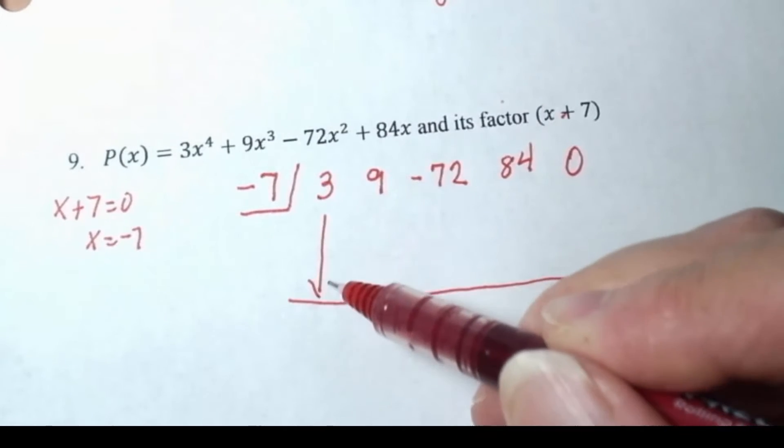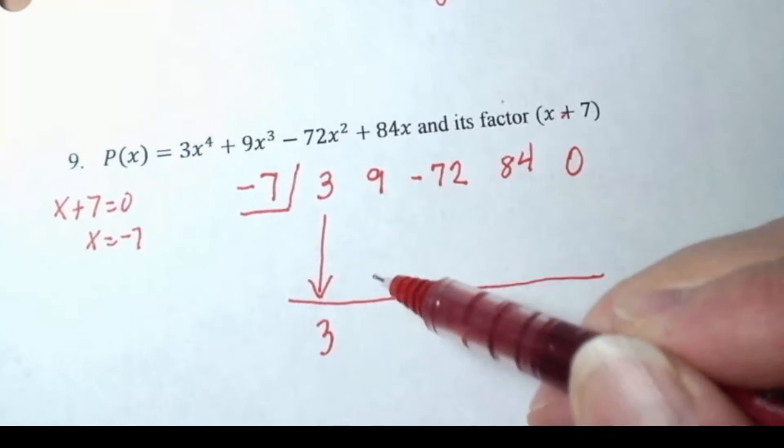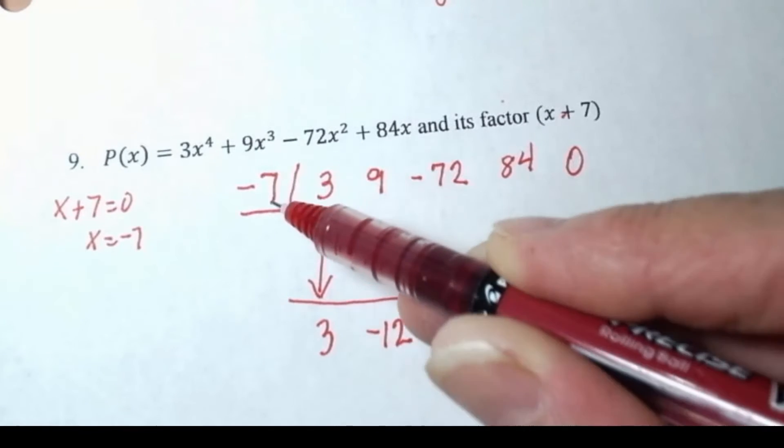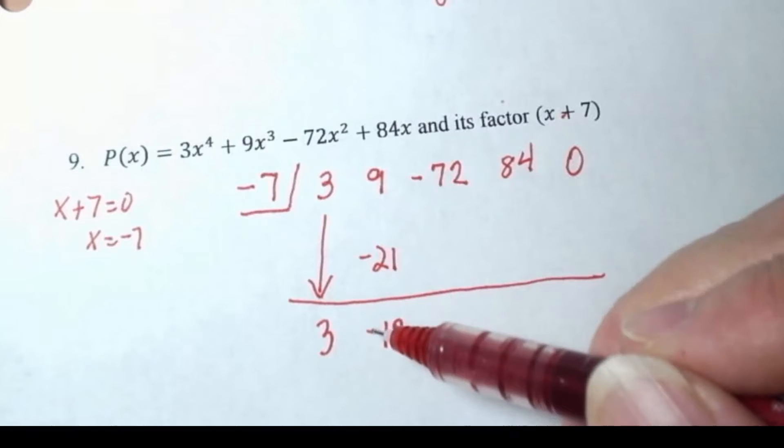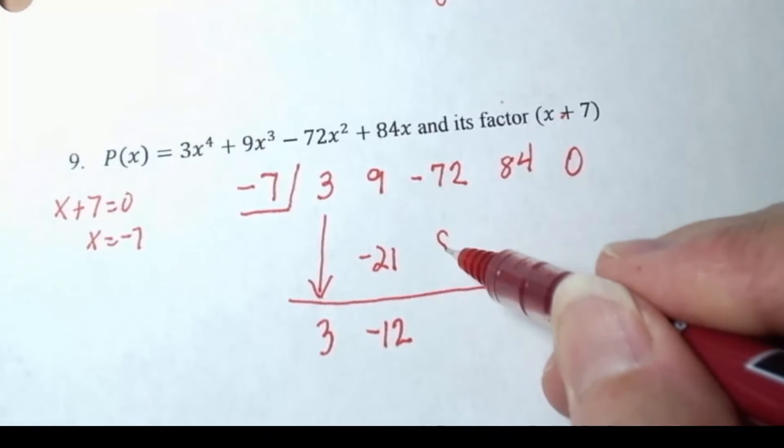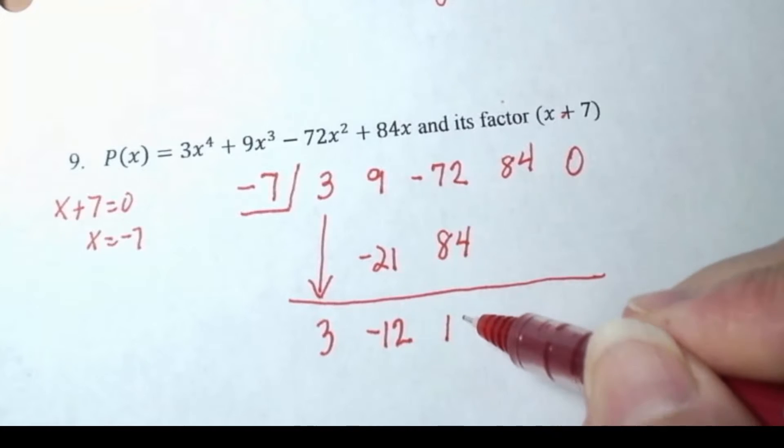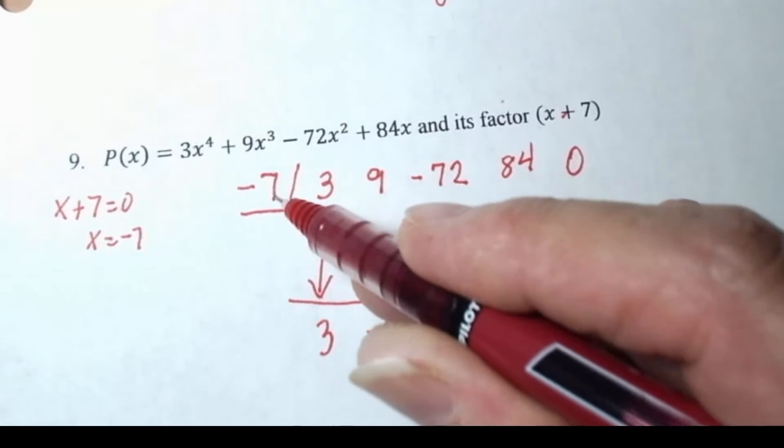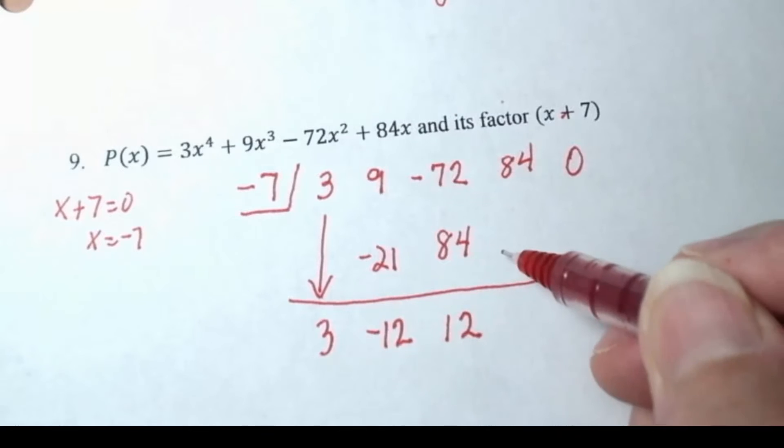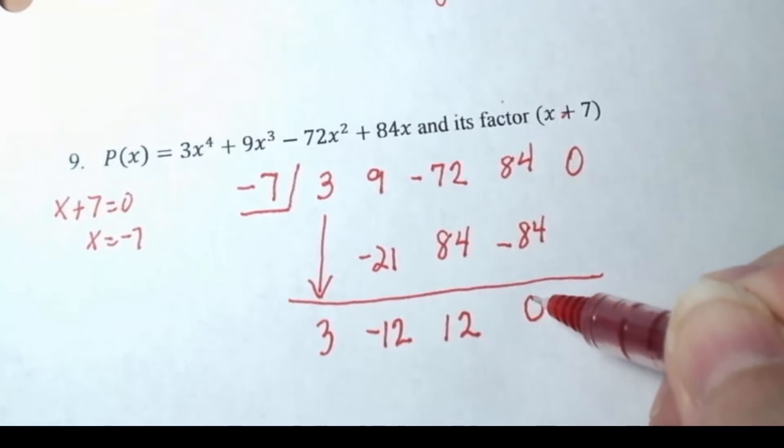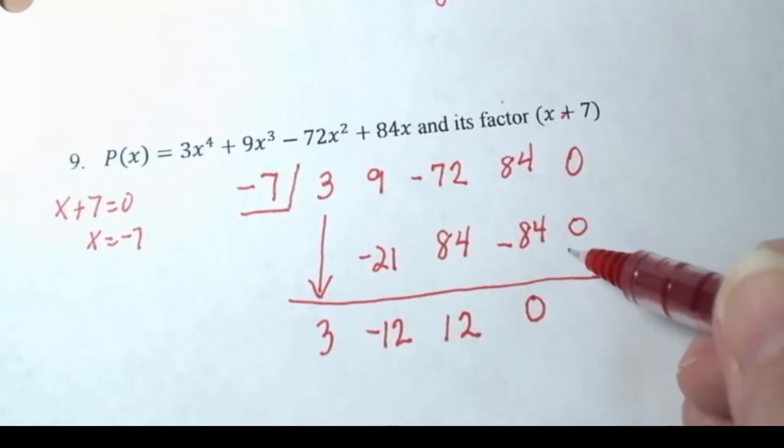Bring down the first coefficient, multiply times the negative seven, add these, and that's a negative 12. Multiply this times the negative seven, which is a positive 84, add these, that's a positive 12. Multiply the 12 times the negative seven, which is a negative 84, and we get a zero. Zero times negative seven is zero.